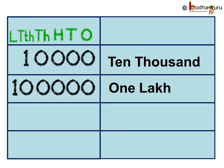And lastly, 1 lakh. 1 lakh has the 1s, 10s, 100s, 1000s, 10,000s and lakhs place. It is basically 1,00,000. It is called 1 lakh and it has five zeros. Now that we know about the place values of digits in a six-digit number, let us try to write bigger numbers in expanded form.